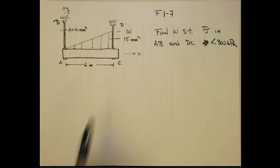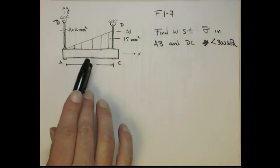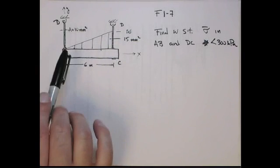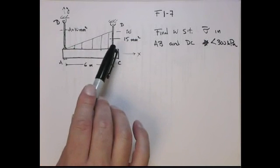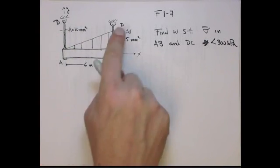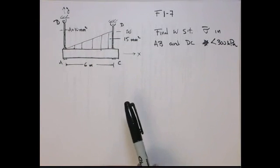So the problem is here we have this beam. We can ignore the weight of this. It has a linear distributed loading on there. And then it's suspended by these two bars, AB and CD. And it gives the cross-sectional areas of both of those. They're 10 and 15 millimeters squared, respectively.